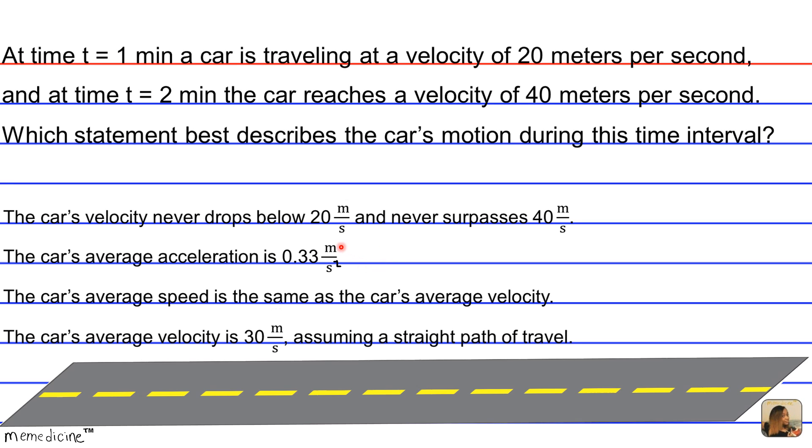The average acceleration is the change in velocity over time, so we have at two minutes, 40 meters per second, minus 20 meters per second at one minute, all divided by two minutes minus one minute, which corresponds to the above values in the numerators. But we know that we don't have minutes in the denominator for the answer choice.